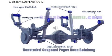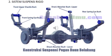Jenis yang kedua adalah sistem suspensi rigid. Pada gambar tersebut, itu adalah contoh sistem suspensi rigid yang menggunakan pegas daun paralel. Tipe suspensi rigid yang modelnya pegas daun paralel ini biasanya digunakan pada suspensi bagian belakang.